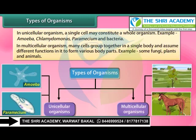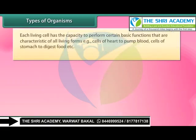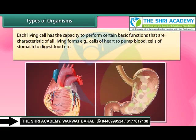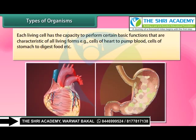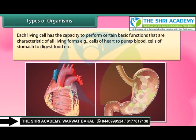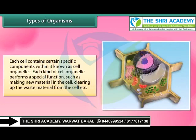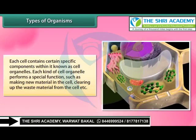In multicellular organisms, many cells group together in a single body and assume different functions to form various body parts. Examples include some fungi, plants, and animals. Each living cell has the capacity to perform certain basic functions characteristic of all living forms — for example, cells of the heart pump blood and cells of the stomach digest food. Each cell contains certain specific components known as cell organelles.